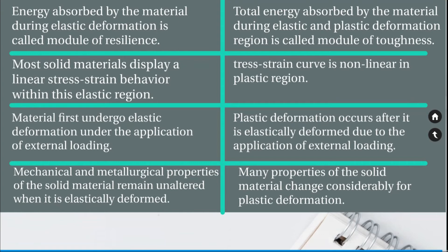Fifth, a material first undergoes elastic deformation under the application of external loading, whereas plastic deformation occurs only after it has been elastically deformed. Sixth, mechanical and metallurgical properties of a solid material remain unaltered when it is elastically deformed, whereas many properties of solid material change considerably under plastic deformation.